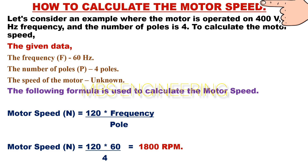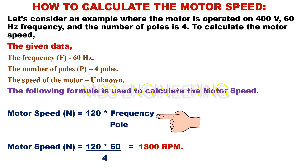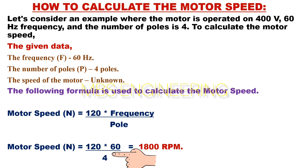Let's consider an example where the motor is operated on 400 volts, 60 hertz frequency, and the number of poles is 4. To calculate the motor speed, we use the formula: Motor speed RPM, N, equals 120 into frequency divided by poles. Plugging in the data, we get N equals 120 into 60 divided by 4. Therefore, the speed of the motor is 1800 RPM.